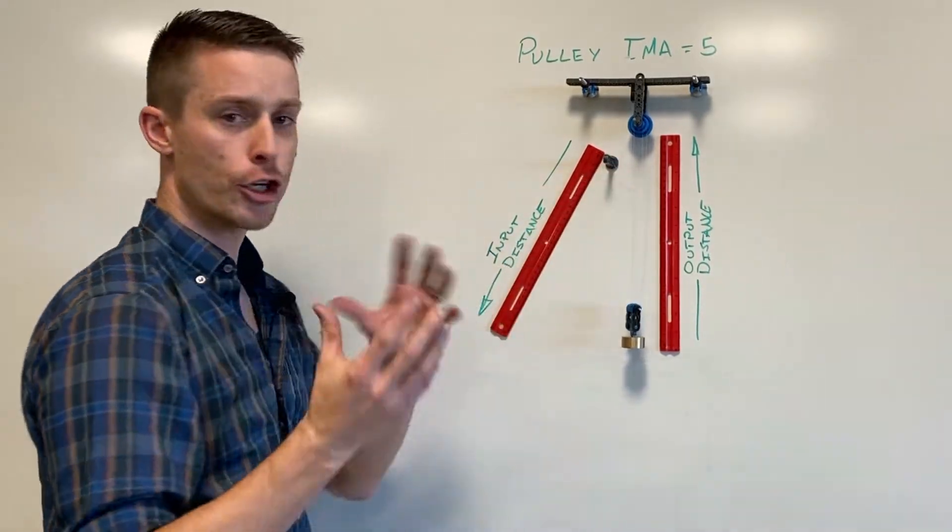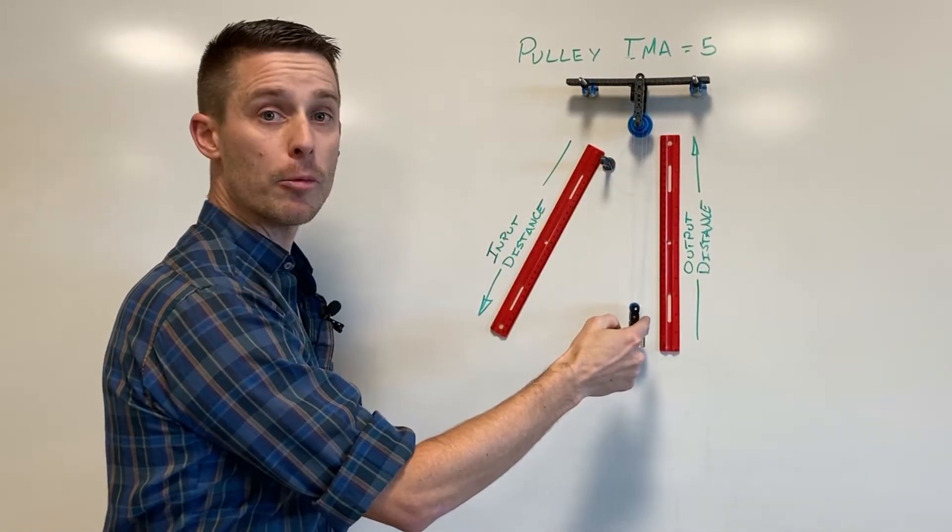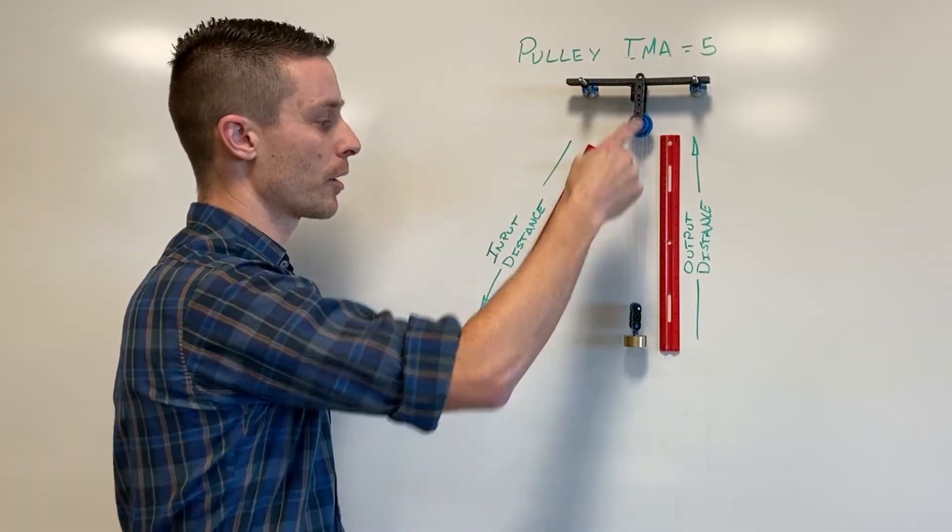On a pulley there's really two ends of the string. You have this input end of the string and an output end of the string which can be connected either up here or down here.